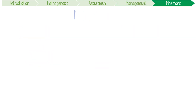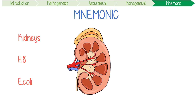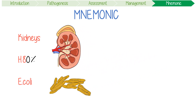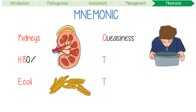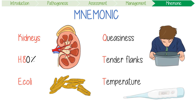Moving on to my mnemonics: to remember the main causes of pyelonephritis, I remember that kidneys hate E. coli — reminding me that 80% of infections are from this gram-negative bacteria. I also like to keep in mind that pyelonephritis is a bit of a cutie and presents with queasiness, tender flanks, and a temperature.